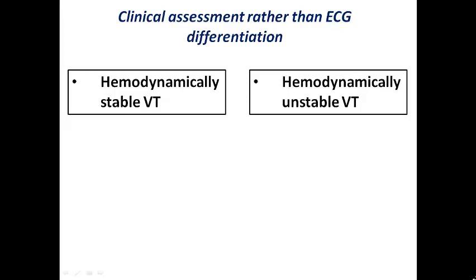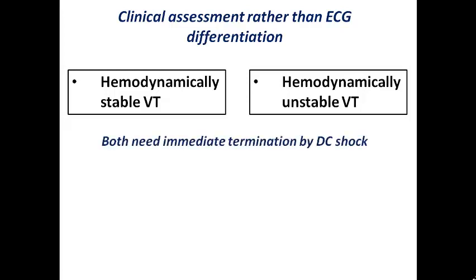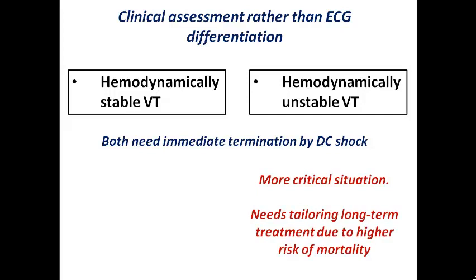VT can also be classified by hemodynamics — a clinical rather than ECG diagnosis. VT can present in a hemodynamically stable form where the patient is perfused, or as hemodynamically unstable with shock. Both need termination by DC shock, but hemodynamically unstable VT requires more rapid intervention and tailored long-term treatment due to higher mortality risk. In structural heart disease guidelines, hemodynamically unstable VT is often categorized with VF, for example in requiring ICD implantation.